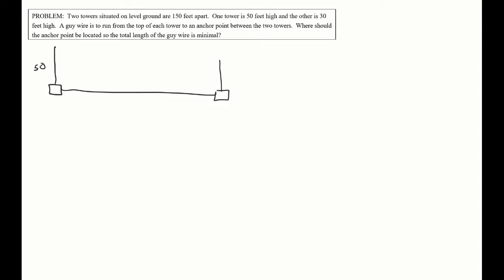The problem: two towers on level ground are 150 feet apart. One tower is 50 feet high, the other is 30 feet high. Starting with a diagram right away — I've got one tower that is 50 feet high, and then 150 feet away I've got tower number two which is 30 feet. The total distance is 150 feet.